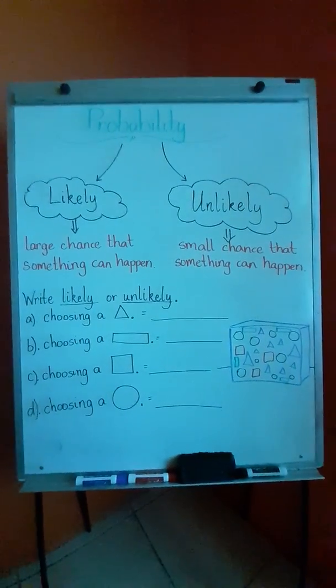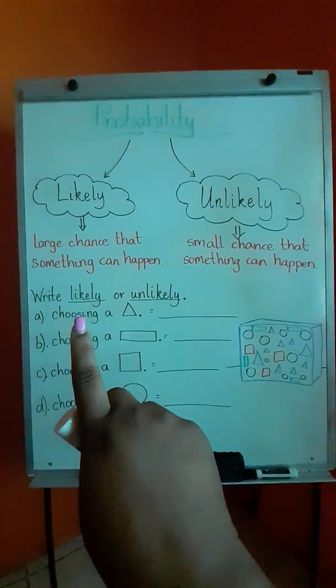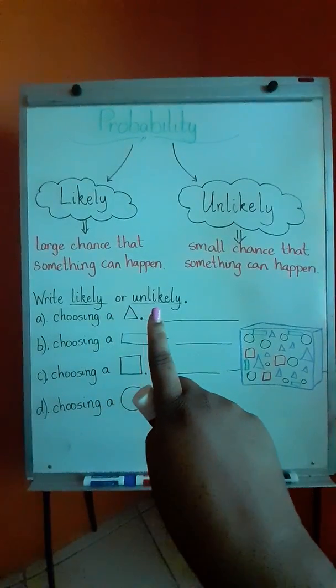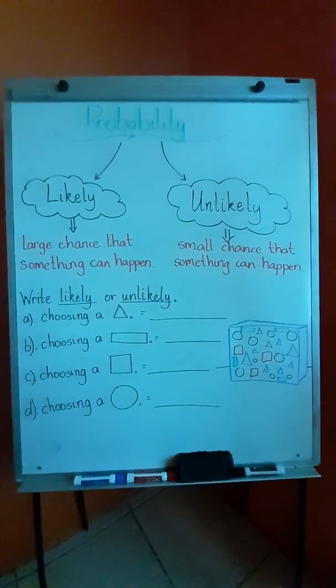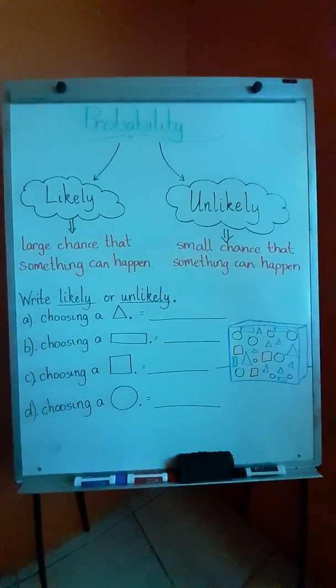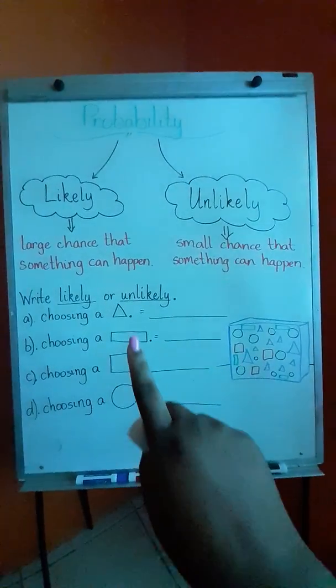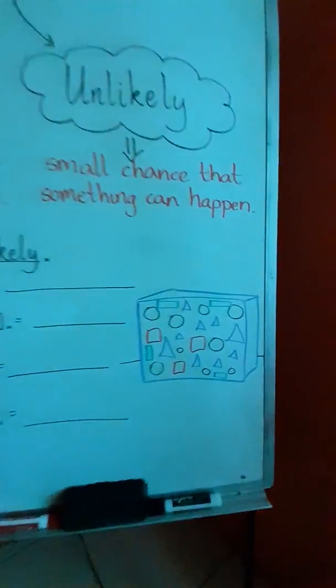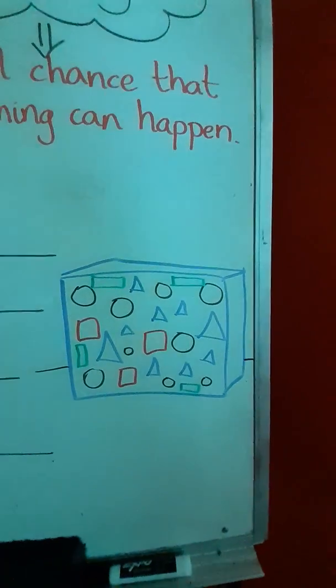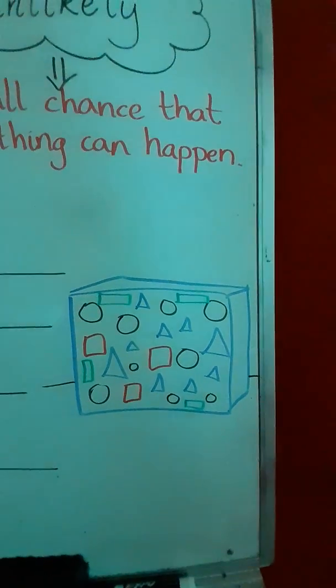The instruction says write likely or unlikely. Part A. What is the probability of us choosing a triangle? When we look at the box, do we see a lot of triangles or a little?